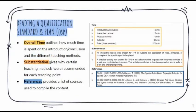Continuing on, you'll also find the overall time, substantiation, and references in your QSP. The overall time will dictate how much time is spent on each part of the lesson — it's an overall breakdown of how much you're spending on conclusion and introduction, the interactive lecture, practical activity, and so forth. Substantiation gives the reason why teaching methods were chosen for a specific teaching point. References provides a list of sources that were used to compile the content.